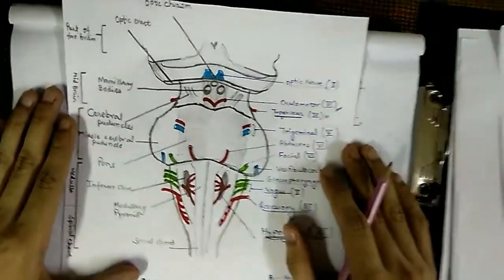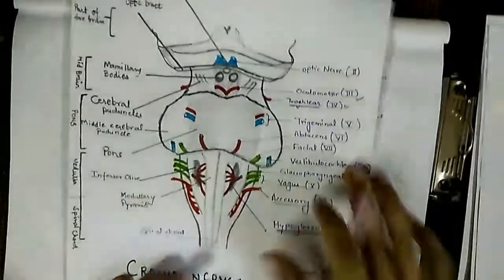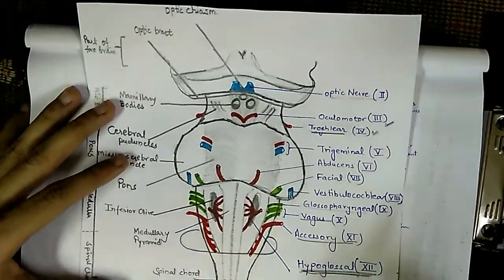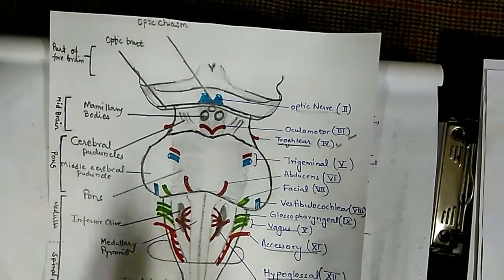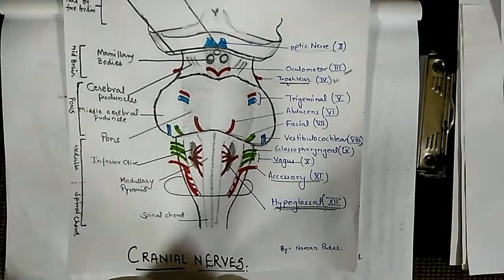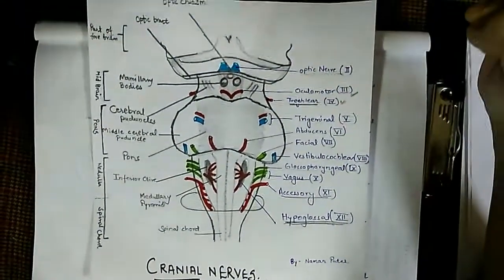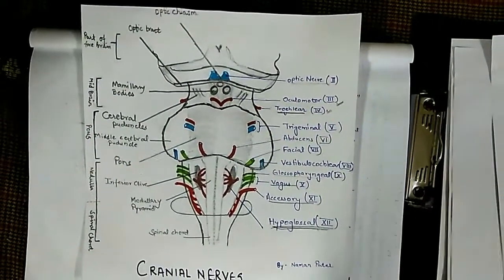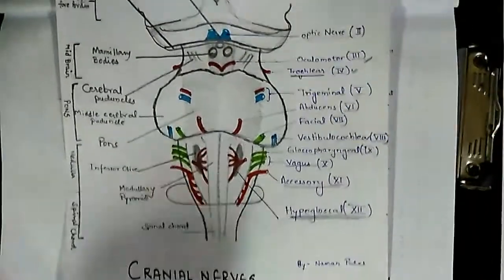There is also the spinal cord below. At this level there is the foramen magnum, and importantly, the accessory nerve enters through the foramen magnum and then exits the skull at the jugular fossa. That covers the origination of the cranial nerves. Hope you liked this video — please subscribe, like, and comment. Bye!